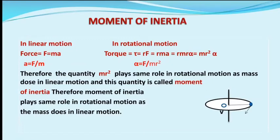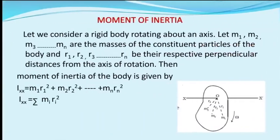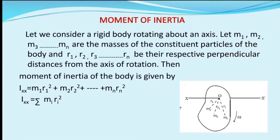Consider a rigid body rotating about an axis. Let m1, m2, m3, ... mn be the masses of the constituent particles of the body, and r1, r2, r3, ... rn be their respective perpendicular distances from the axis of rotation.